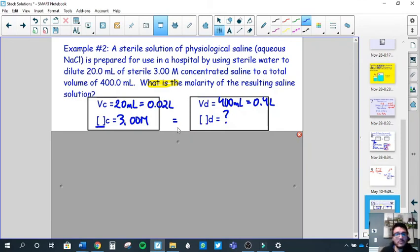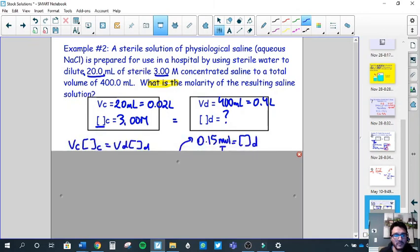Next question. A sterile solution of physiological saline, so that's aqueous sodium chloride, is prepared for use in hospital by using sterile water to dilute 20 mLs of sterile 3 molar concentrated saline to a total volume of 400 mLs. What is the molarity of the resulting saline solution? So you're given your volume of your concentrated amounts, it's 20 mLs, convert that right away to liters, just divide by 1000. It gives you its concentrated amounts. Then it says to a volume of 400 mLs, and that new concentration, that diluted solution now is 400 mLs, which is 0.4 liters. What is the concentration of the diluted solution? That's what you're asked to figure out.